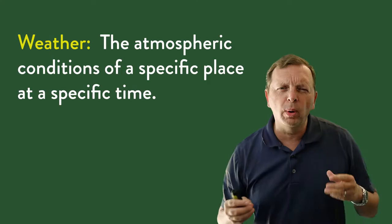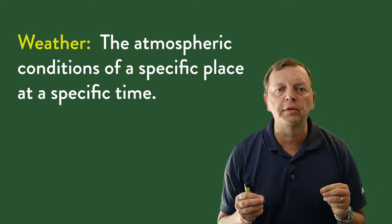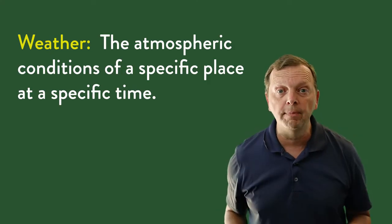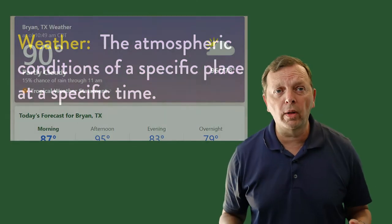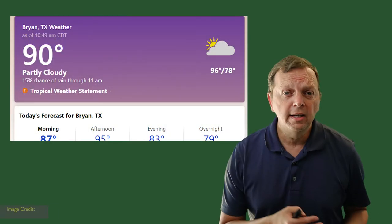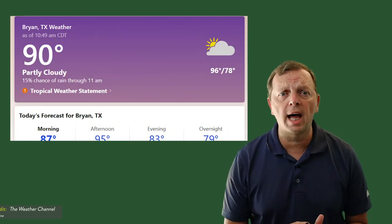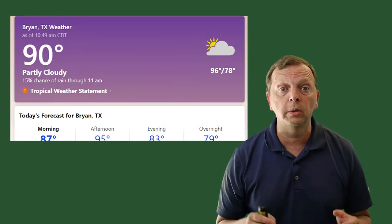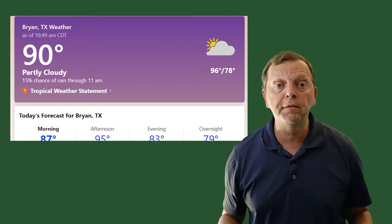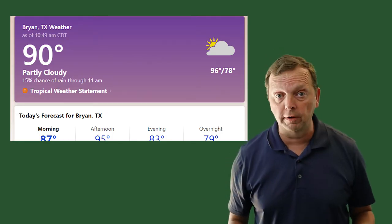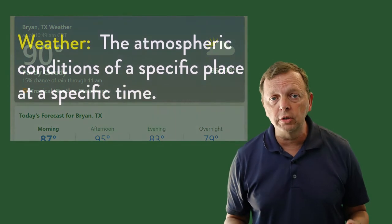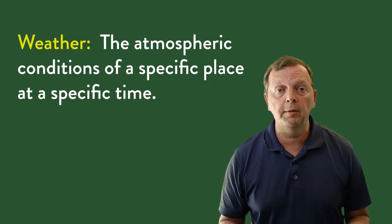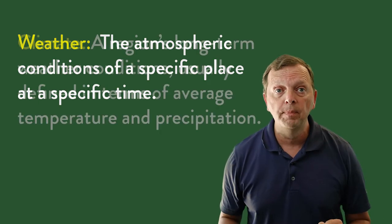Weather is more of a snapshot of what's going on in the atmosphere at a particular place at a particular time. An example of weather might be that at 10:49 on the 24th of July, the temperature was 90 degrees, it was partly cloudy with a 15% chance of rain. These are specific conditions of the atmosphere in a specific place at a specific time. That's weather.